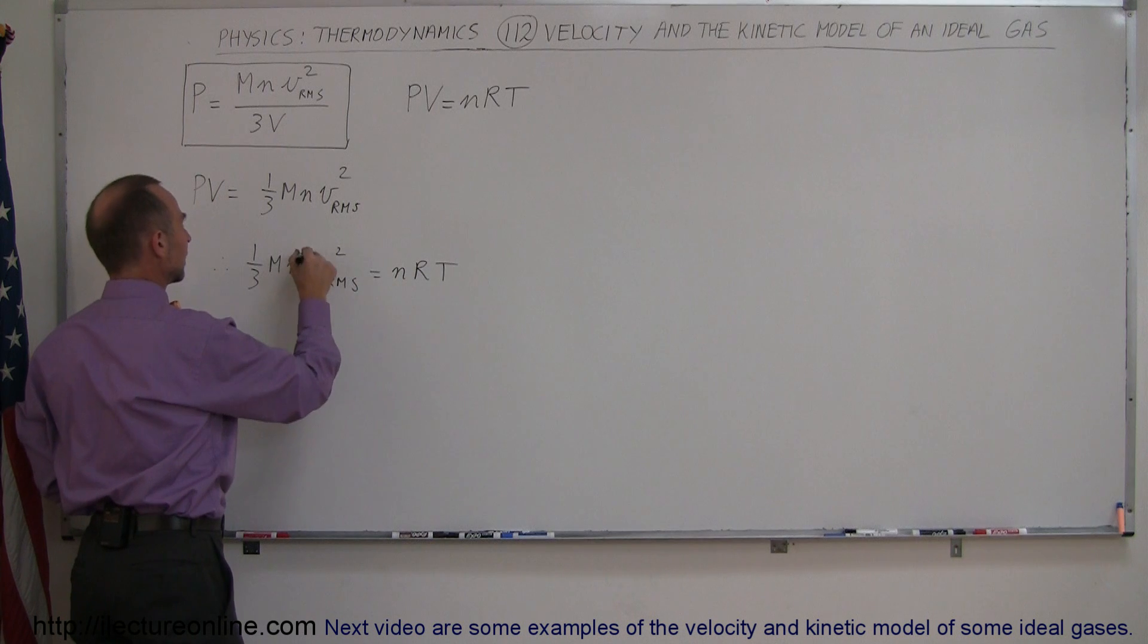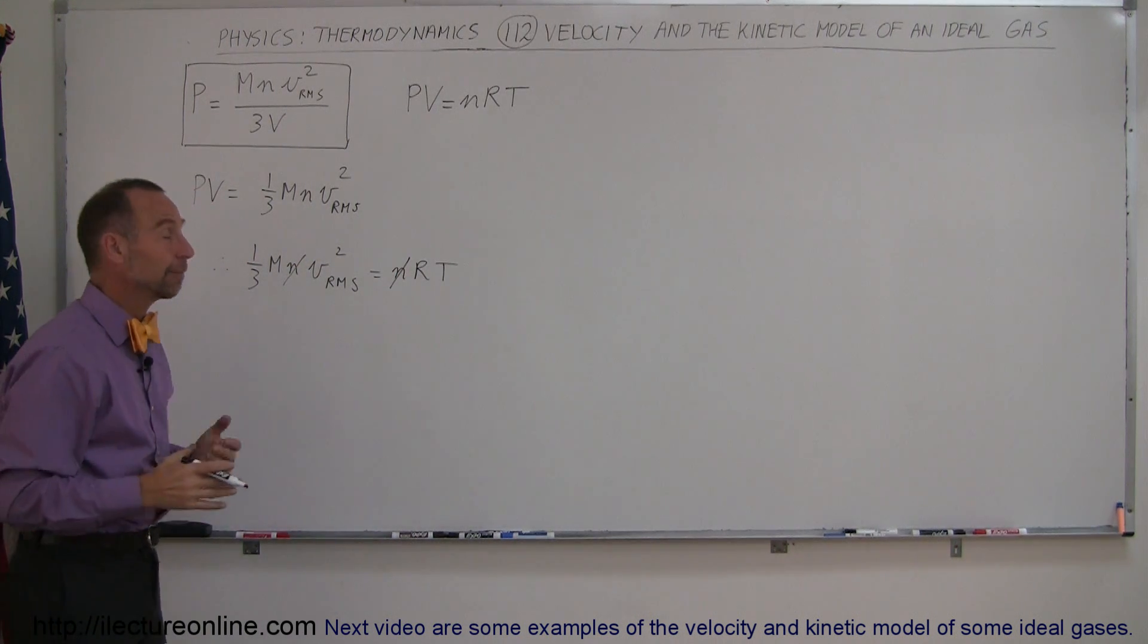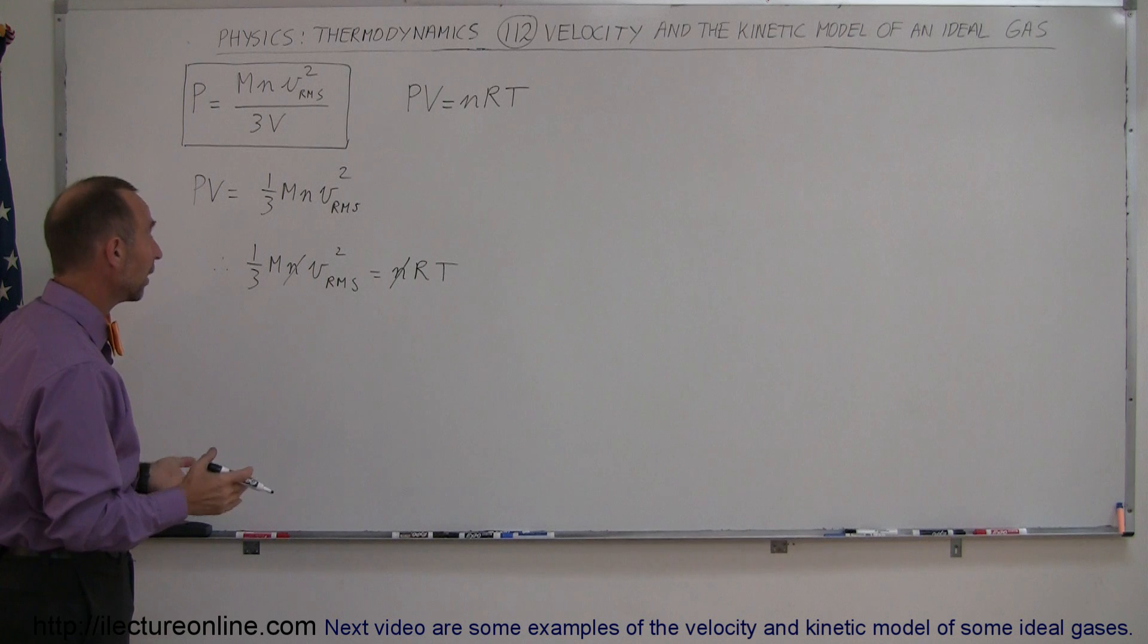Now N and N here can cancel on both sides, so that means that the velocity is not dependent on the number of moles in the box. That's interesting.